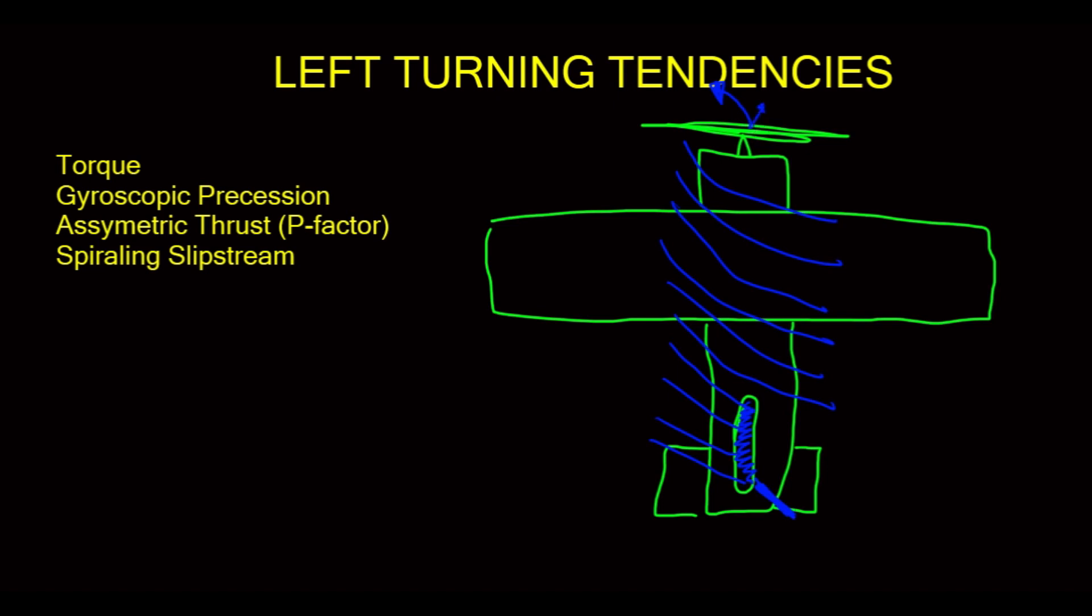So, you can see with all of these, torque, gyroscopic precession, asymmetric thrust, spiraling slipstream, are all contributing to our aircraft wanting to turn around here to the left. Unless we do something, unless we control this left turning, we may run off the runway or whatever the case may be.